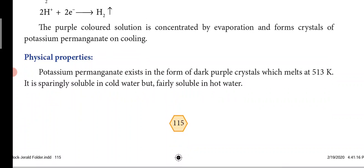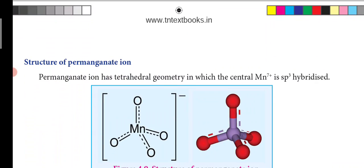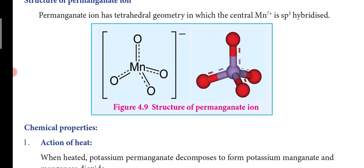The physical properties of potassium permanganate: it exists as dark purple crystals which melt at 513 K. It is sparingly soluble in cold water but fairly soluble in hot water. The permanganate ion (MnO₄⁻) has manganese at the center with four oxygen atoms in a tetrahedral shape, carrying a 1− charge. The central manganese ion has an oxidation state of +7 and is sp³ hybridized.